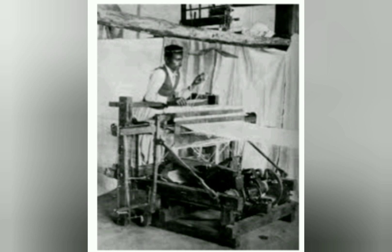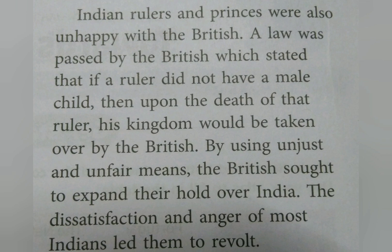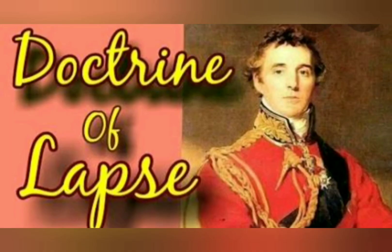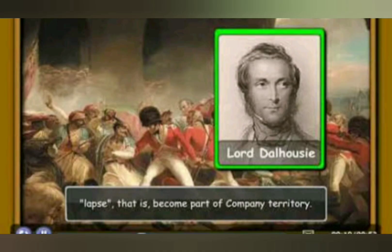Indian rulers and princes of small kingdoms became very unhappy with the British because their policies were wrong. The British even passed a law — the Doctrine of Lapse — according to which if a ruler died without a male child, upon his death his kingdom would be taken over by the British. Using all these unjust means, the British expanded their hold over India and they were successful in this.